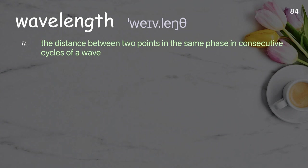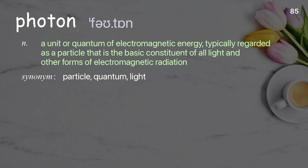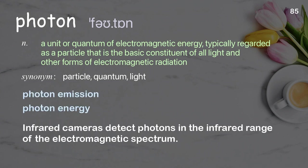Wavelength: the distance between two points in the same phase in consecutive cycles of a wave. Examples: wavelength of light, long wavelength laser. White color is made up of many different wavelengths of light. Photon: a unit or quantum of electromagnetic energy, typically regarded as a particle that is the basic constituent of all light and other forms of electromagnetic radiation. Examples: photon emission, photon energy. Infrared cameras detect photons in the infrared range of the electromagnetic spectrum.